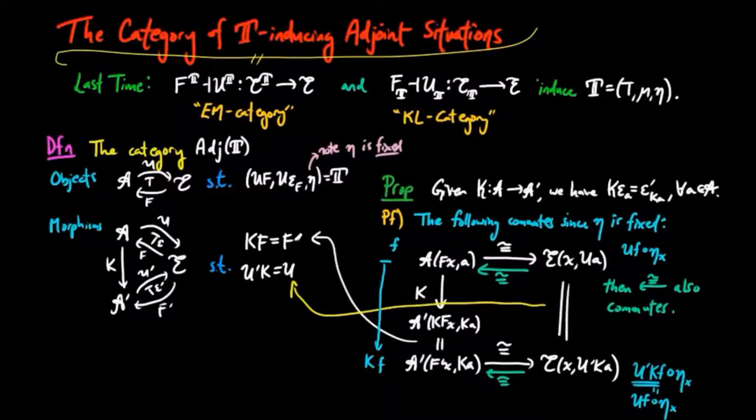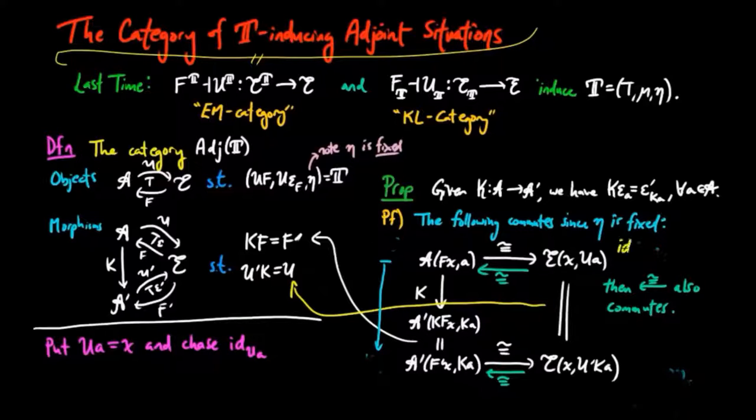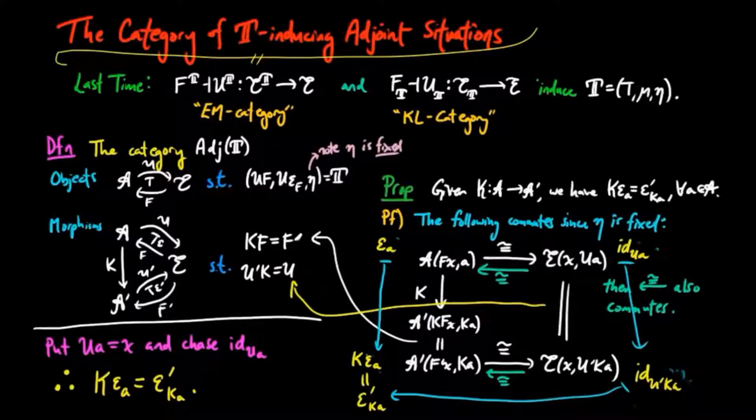So since this diagram commutes, the diagram with the inverse morphisms must also commute. So now we can prove the claim by putting UA equal to X and chase the identity on UA. The identity on UA is taken to the counit ε_a on small a by the isomorphism. Then applying K, we have K ε_a as a resulting element coming from taking the high road here. If we take the low road, we have the identity on UA being equal to the identity on U prime Ka, which is then taken to the counit ε prime Ka by the isomorphism of the adjoint situation. Then since we know that this square commutes, as we showed before, we must have the equality of K ε_a equal to ε prime Ka.